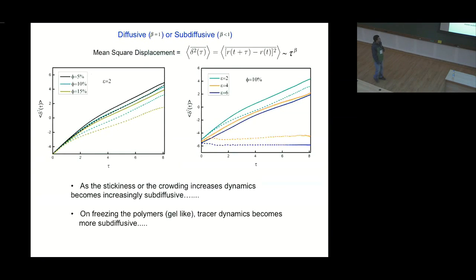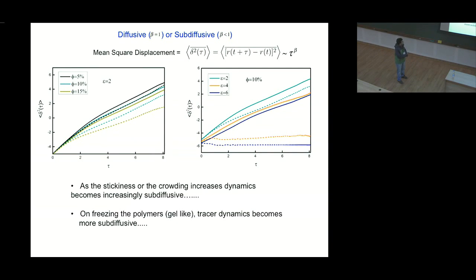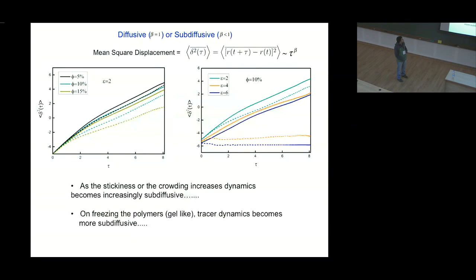Let me show you the results. When you look at the mean square displacement of the tracer as a function of time on a log-log plot, you get a ballistic region at small time as expected, then it becomes either diffusive or sub-diffusive depending on how many polymers you have. For small volume fraction of polymer it is more likely to be diffusive, but if you increase the volume fraction the dynamics of the tracer becomes sub-diffusive.